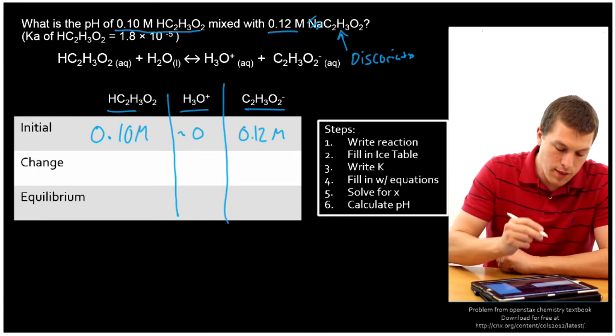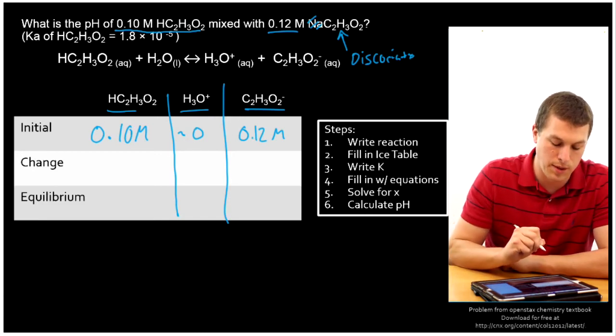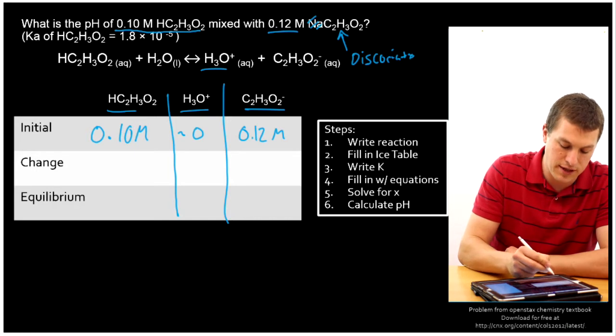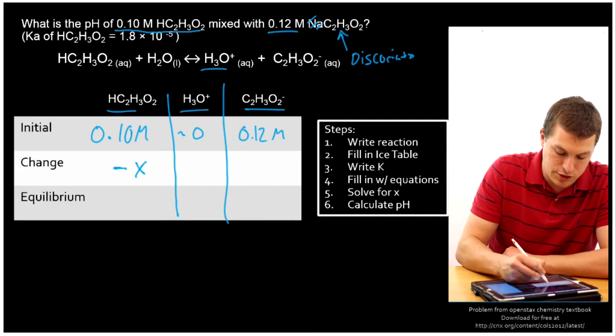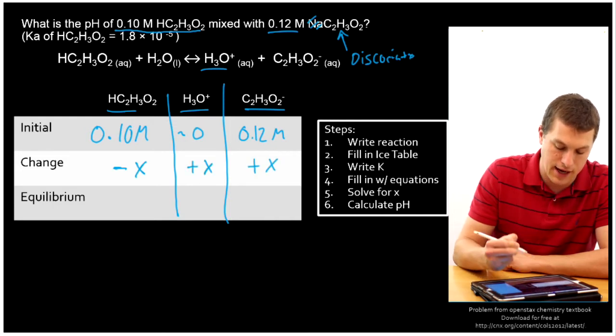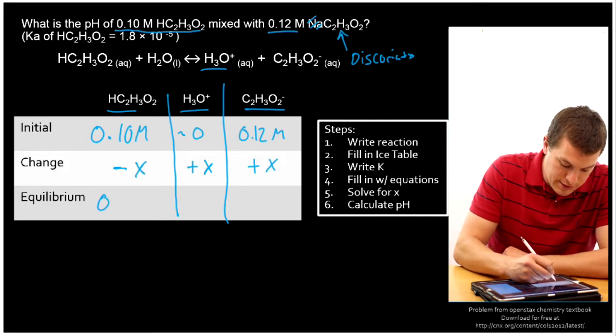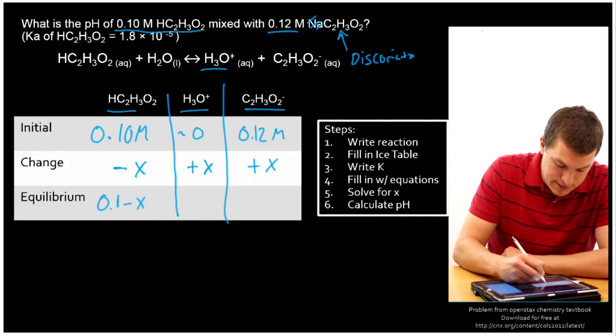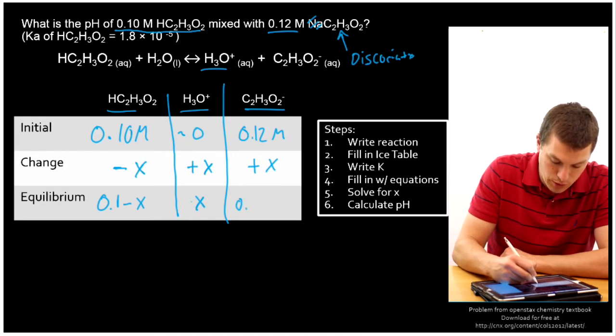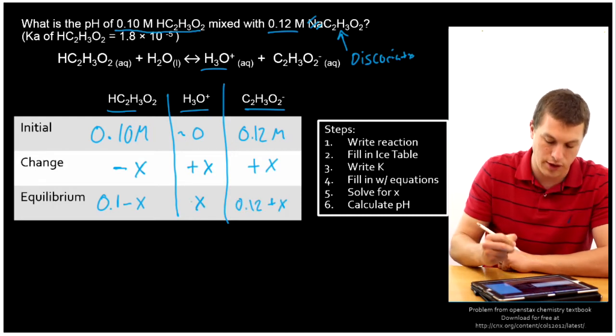So that means that I have exactly 0.12 molar acetate. And now there's no hydronium ions. This guy's zero. That means that what's going to happen is when we let this come to equilibrium, our acetic acid is going to drop, our hydronium ions are going to increase, and our acetate ions are also actually going to increase. So at equilibrium, we're going to get 0.1 minus X, X for our hydronium ion concentration, and 0.12 plus X.